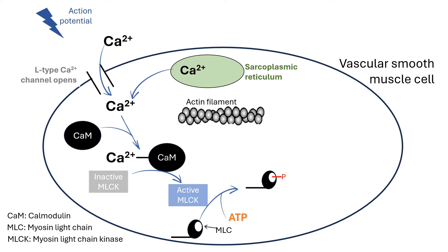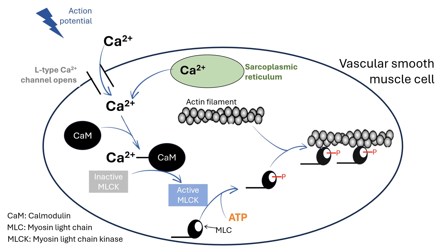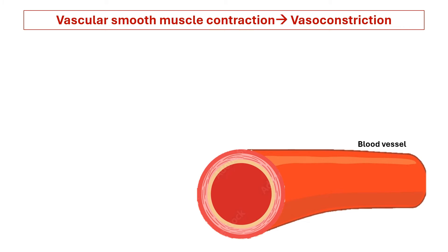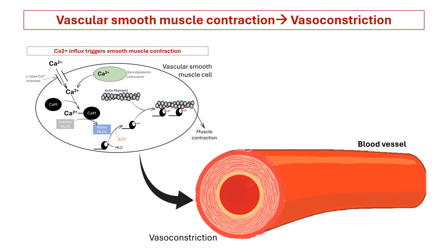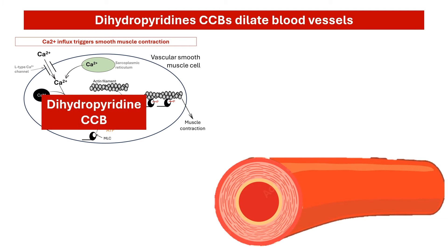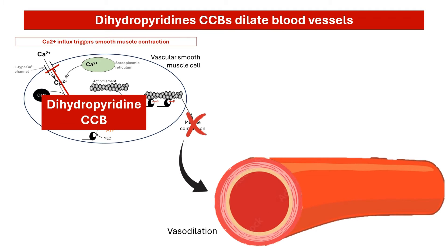MLC phosphorylation leads to cross-bridge formation between the myosin heads and the actin filaments, and hence smooth muscle contraction. Vascular muscle contraction causes constriction of blood vessels. By blocking calcium channels, dihydropyridines are able to relax vascular smooth muscle, leading to a sustained vasodilation or widening of blood vessels.